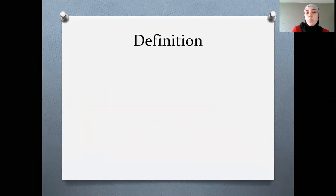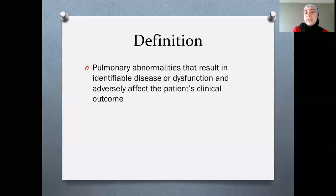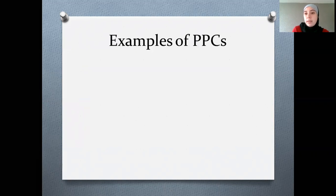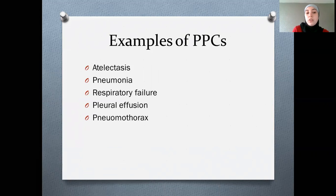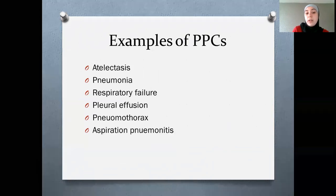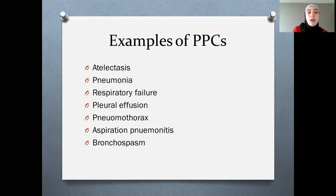The definition of post-operative pulmonary complications refers to pulmonary abnormalities that result in identifiable disease or dysfunction and adversely affect the patient's clinical outcome. The specific complications include atelectasis, pneumonia, respiratory failure (type 1 and type 2), pleural effusions, pneumothorax, aspiration pneumonitis, and bronchospasm. As anaesthetists and intensivists, we can take steps to reduce the risk of these complications.